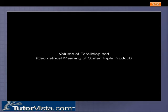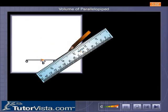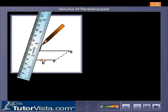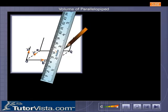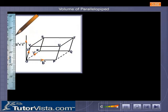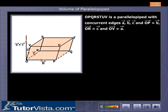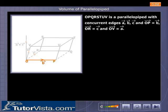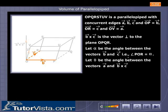We discuss the volume of a parallelepiped and the geometrical meaning of a scalar triple product. OPQRSTUV is a parallelepiped with concurrent edges vector A, vector B, vector C, where vector OP equals vector B, vector OR equals vector C, and vector OV equals vector A. Vector B cross vector C is the vector perpendicular to the plane OPQR.